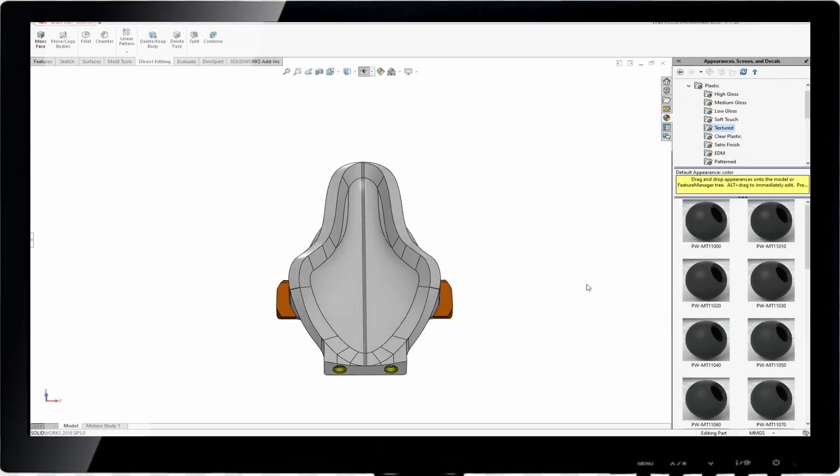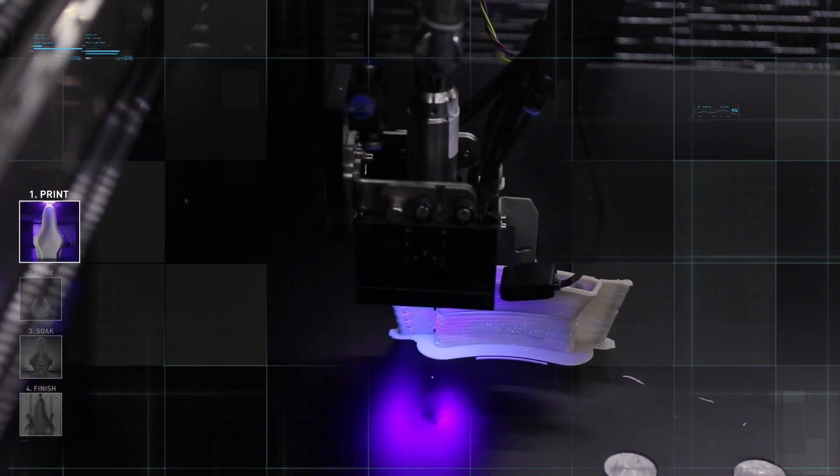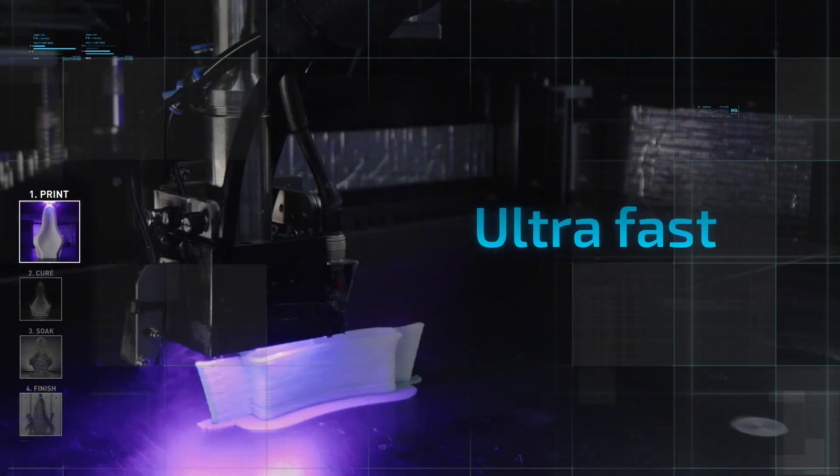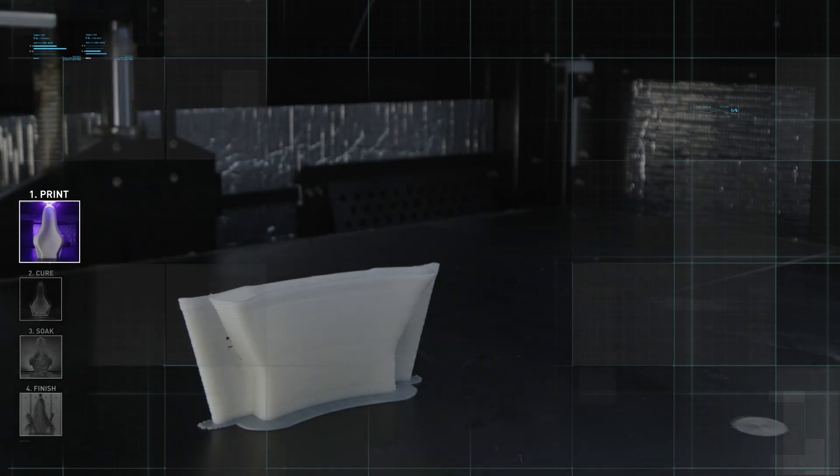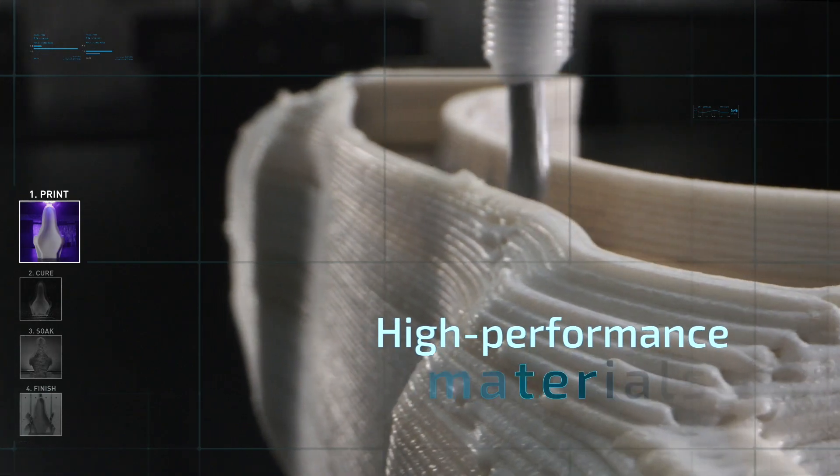How does it work? Based on an initial CAD design, the first head 3D prints an outer, sacrificial shell at high speed. The second head intermittently casts a thermoset material into that shell as it builds.